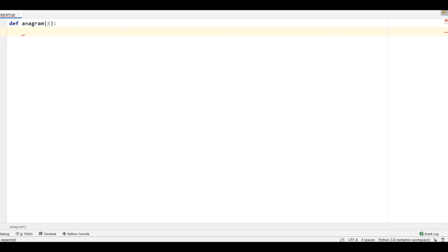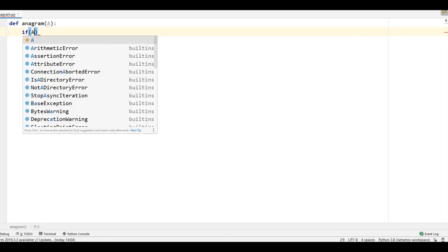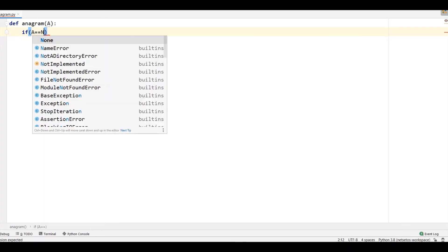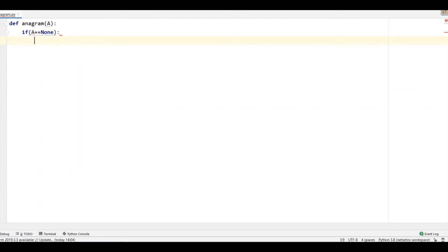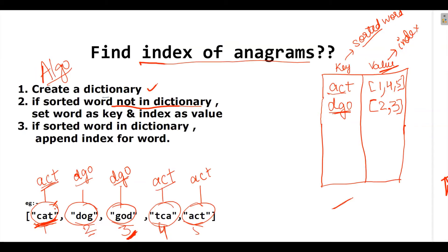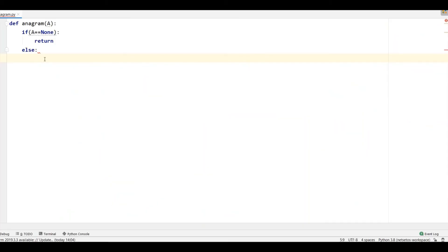First, we need to give the base condition which will be if a is equal to none. If it is none, that means we don't have any array. So, it will return from here itself. Else, first of all, I will make a dictionary. So, I will write dict with empty dictionary.